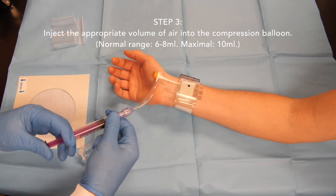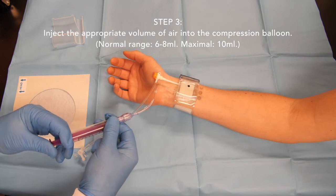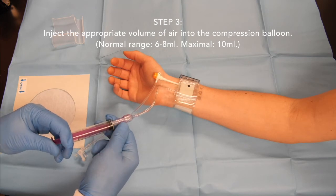Gradually depress the syringe barrel to transfer the air from the syringe through the valve air line to the compression balloon. The normal transfer volume range is 6-8 ml. The initial volume transfer should be no more than 10 ml.